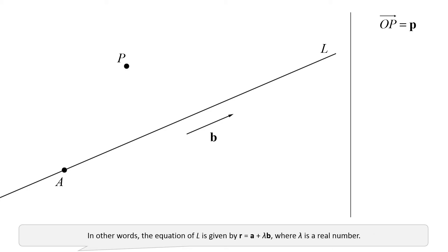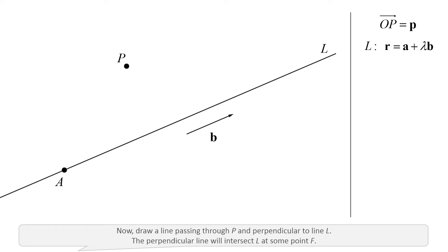In other words, the equation of L is given by R equals A plus lambda B, where lambda is a real number. Now, draw a line passing through P and perpendicular to line L. The perpendicular line will intersect L at some point F.